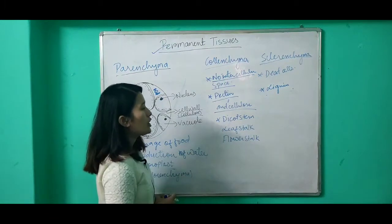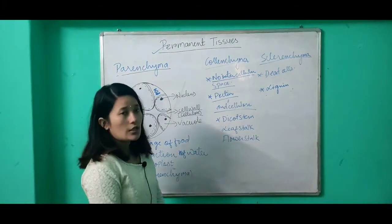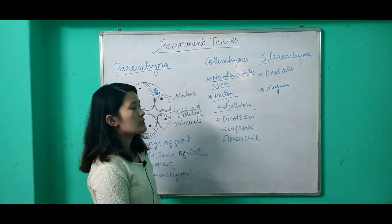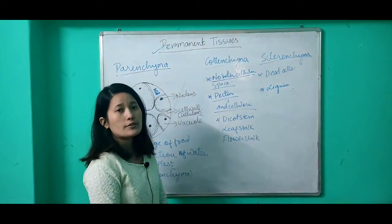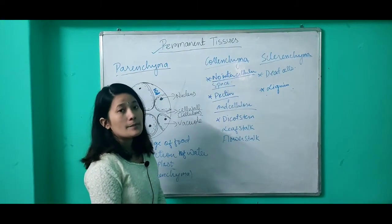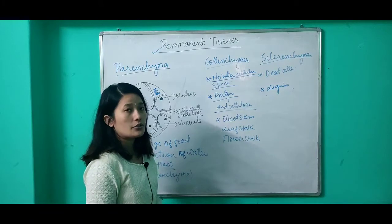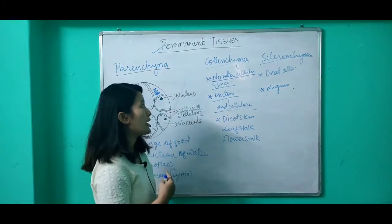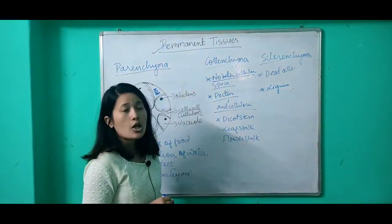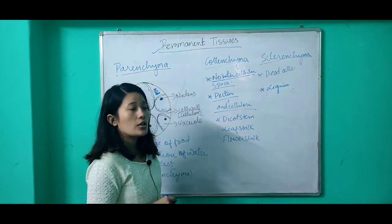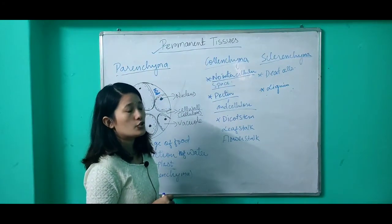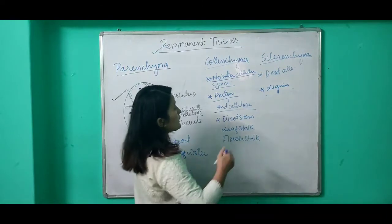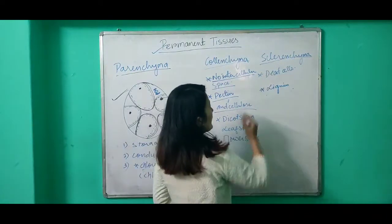Colenchyma cells are present in the dicot stem, leaf stalk, and flower stalk. Their function is to provide mechanical strength and flexibility to the plant. They also help in storage of prepared food.